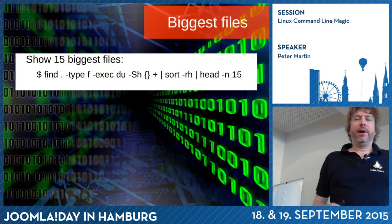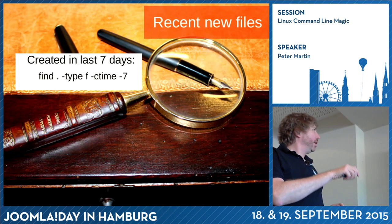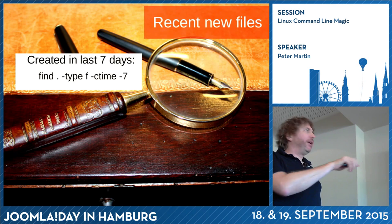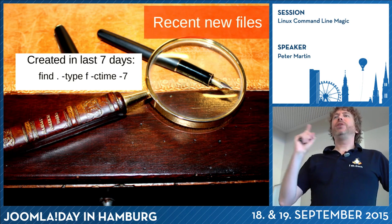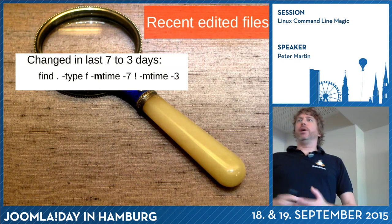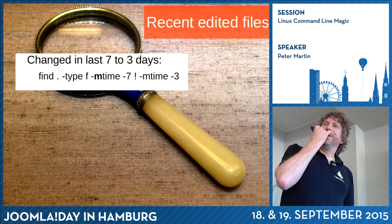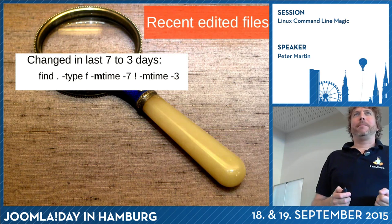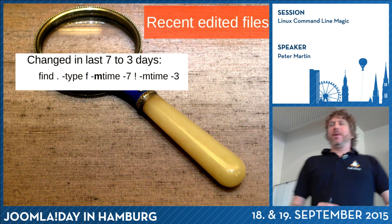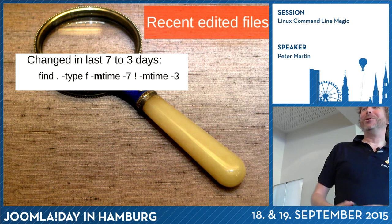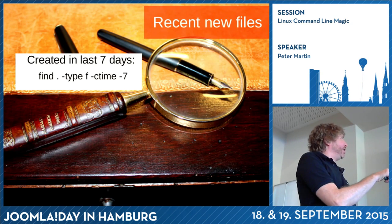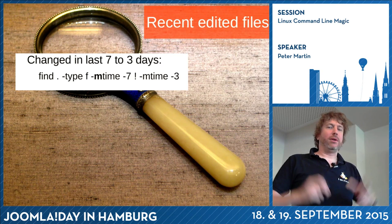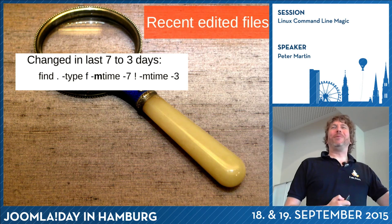If you do something on a server and want to know what's changed in the last couple of days, you can use find with the -type f flag — only files, not directories — and then specify files changed in the last seven days using mtime or ctime. One is changed, the other is created — or maybe modified and changed. You have to check the manual with man find. You can also find files that have been modified recently.